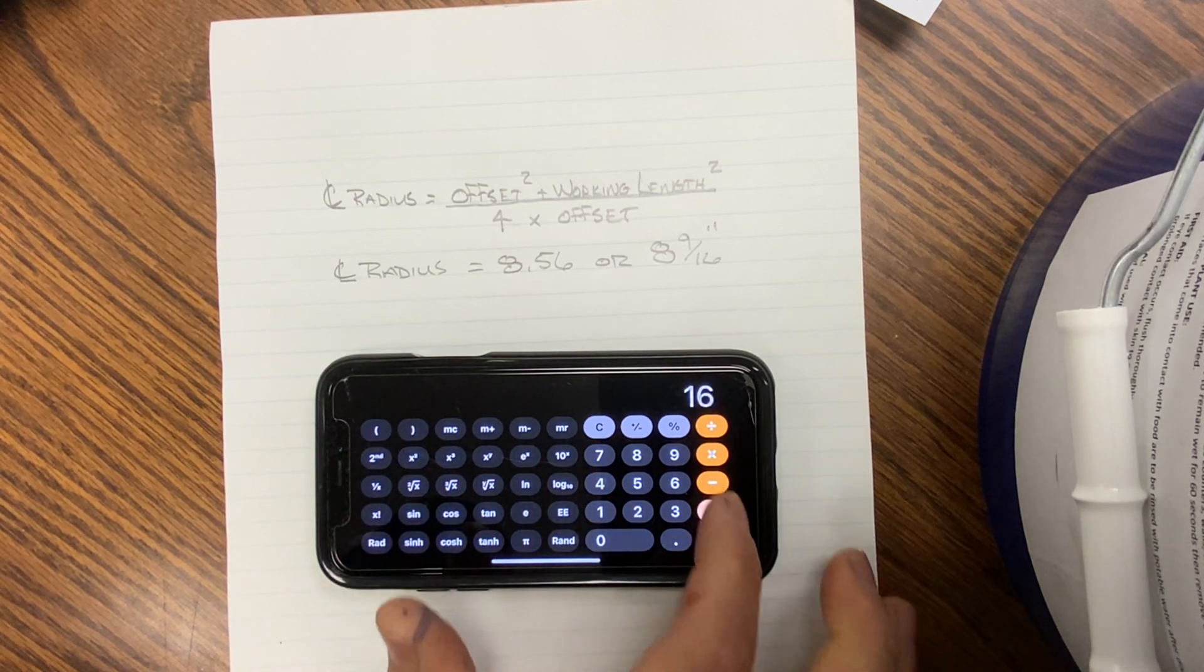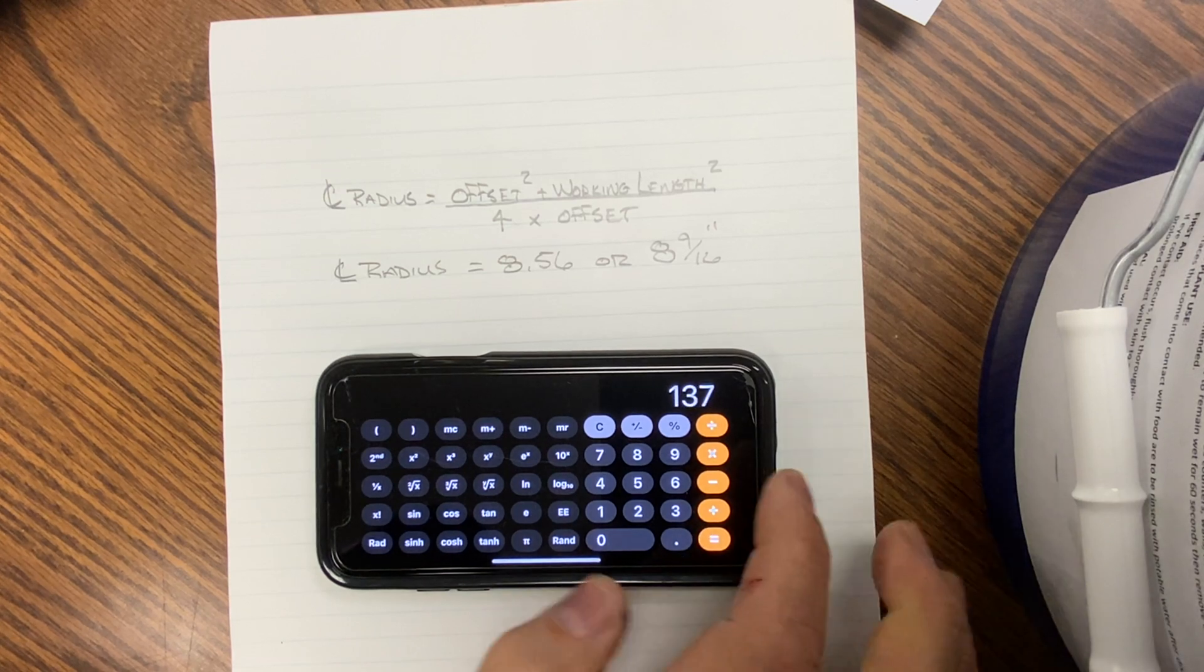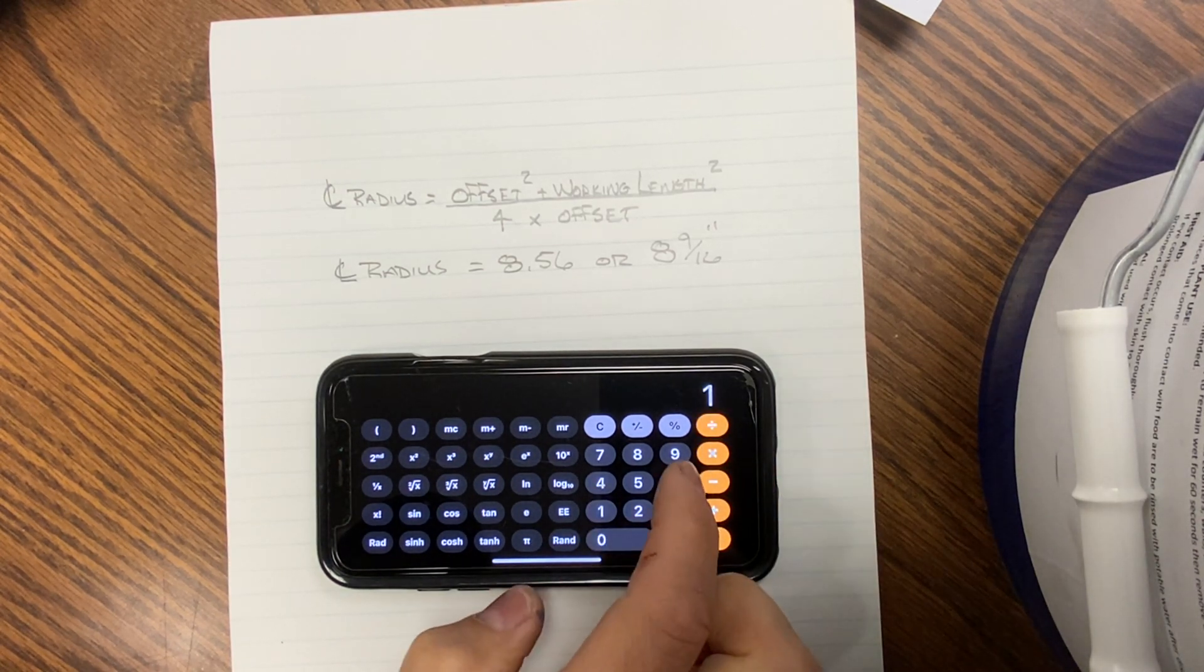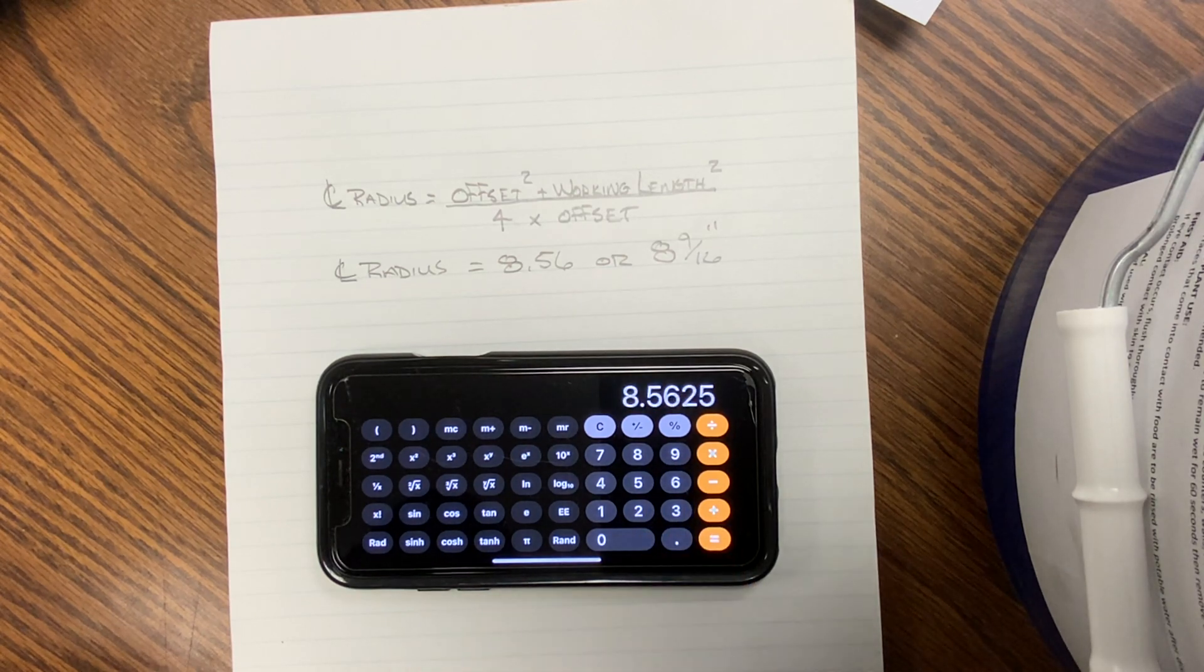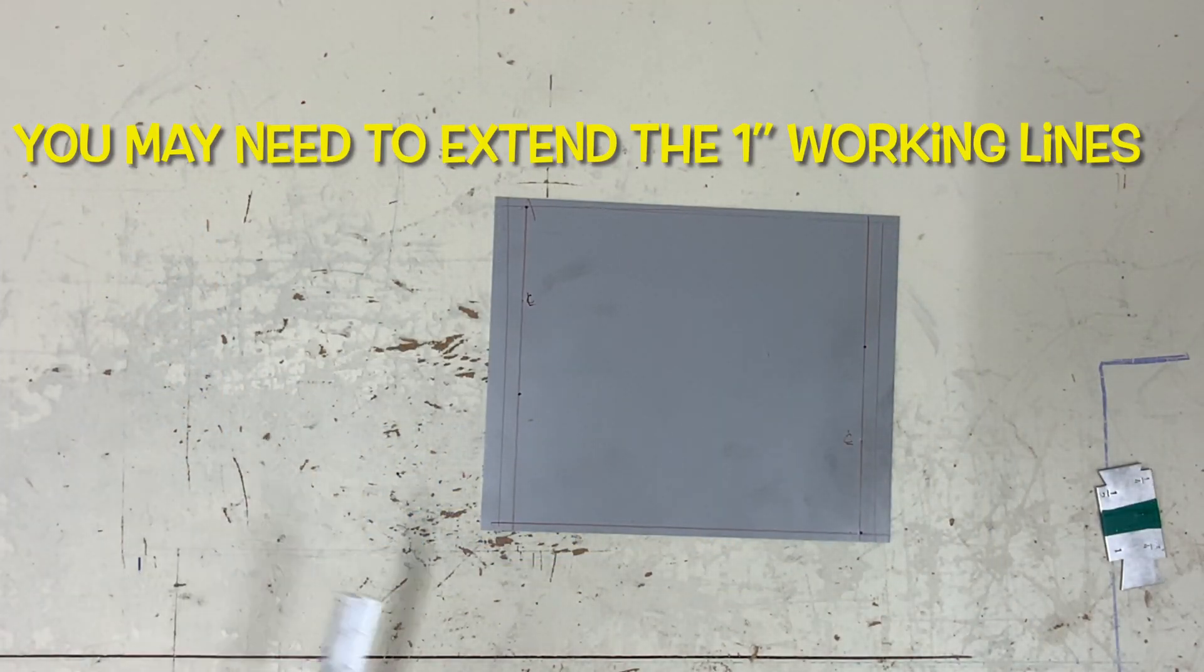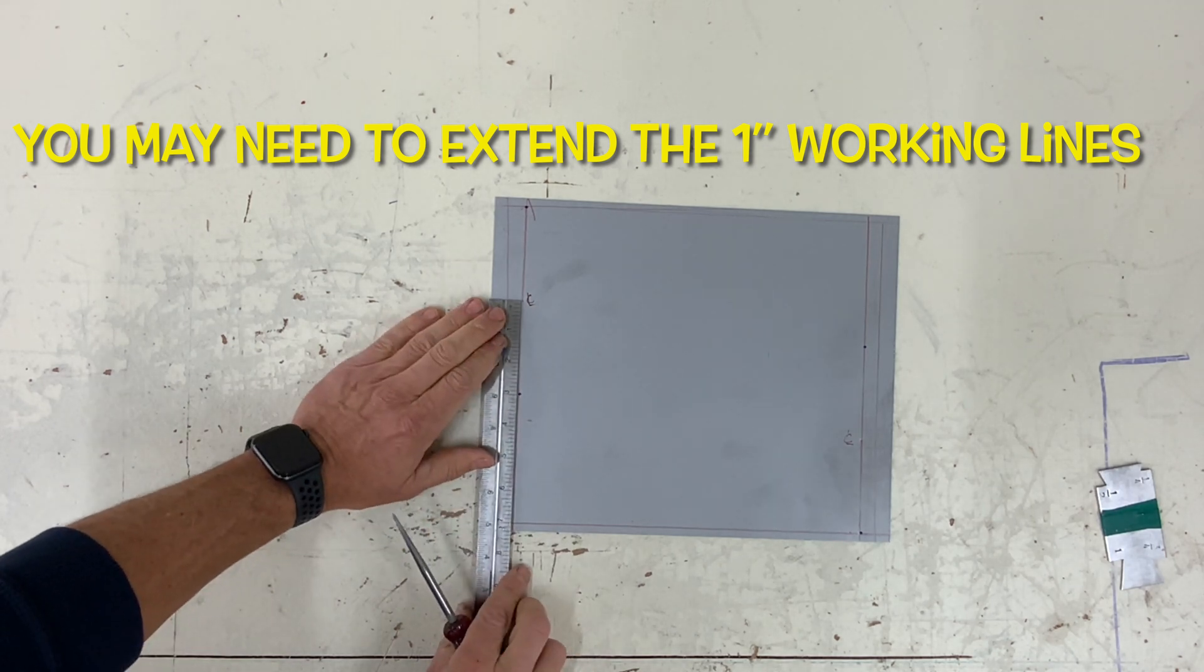Well, here you see I imported the numbers. Four squared plus 11 squared divided by 16 will give me 8.56, which is 8 and 9 sixteenths. So what do I do with that 8 and 9 sixteenths? From the center line...